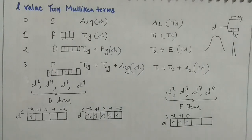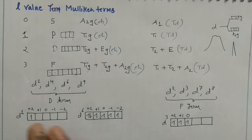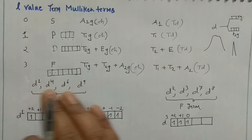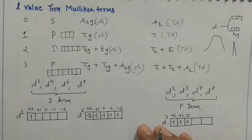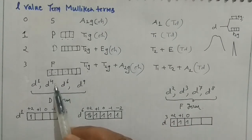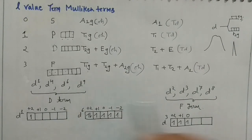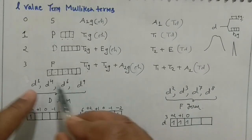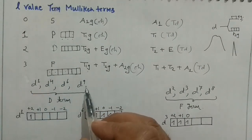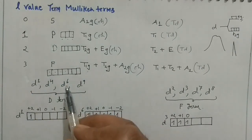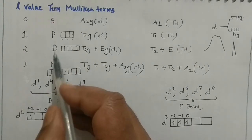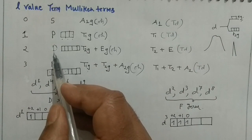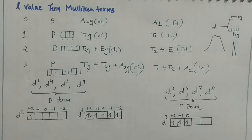Now I am giving you the magic numbers — my own term. Remember 1469, then 2378. If you remember just 14, that is very helpful. Whenever you have d1, d4, d6, and d9 terms, the ground state spectroscopic term that comes out will be D. Let us verify with d1: one electron in +2 orbital, so L = 2, which corresponds to D term.